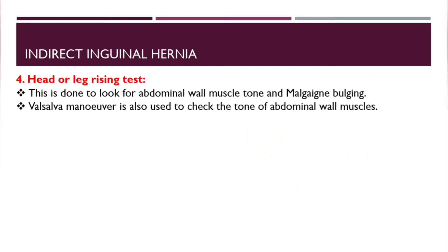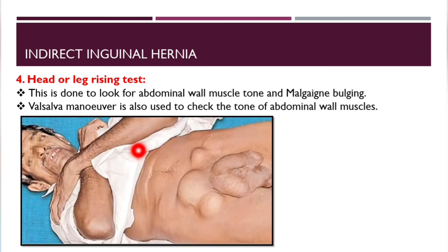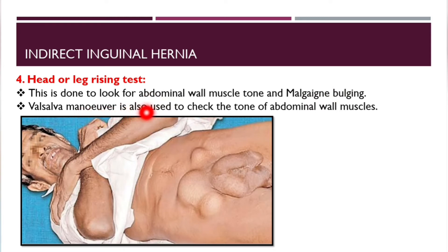The next test is called the head or leg rising test. This is done to look for abdominal wall muscle tone and hernia bulging. The Valsalva maneuver is also used to check the tone of the abdominal wall muscles.